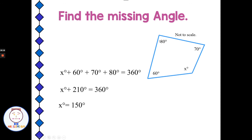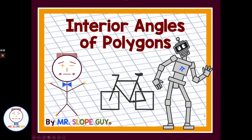So in order for all four angles to add up to 360, angle x has to be 150 degrees. That will get you going on polygons and their interior angles. Have a great day.